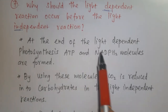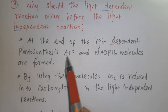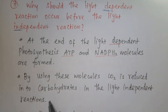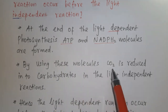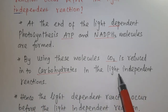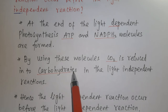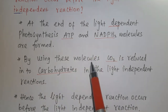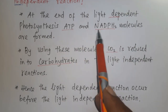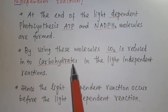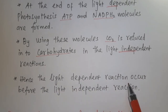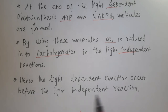In the light-dependent reaction, ATP and NADPH2 molecules are formed. By using these molecules, CO2 is reduced into carbohydrates in the light-independent reaction. Therefore, the light-dependent reaction must occur first so that these ATP and NADPH2 molecules are available to convert CO2 into carbohydrates in the light-independent reaction.